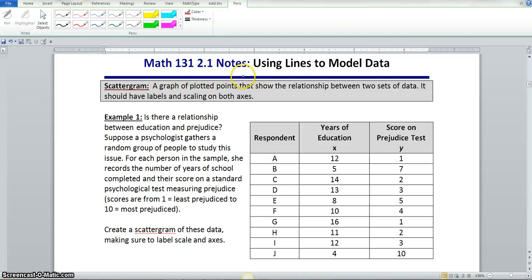Hello class, we're about to start section 2.1 using lines to model data. A scattergram is a graph of plotted points that show the relationship between two sets of data. It should have labels and scaling on both axes.